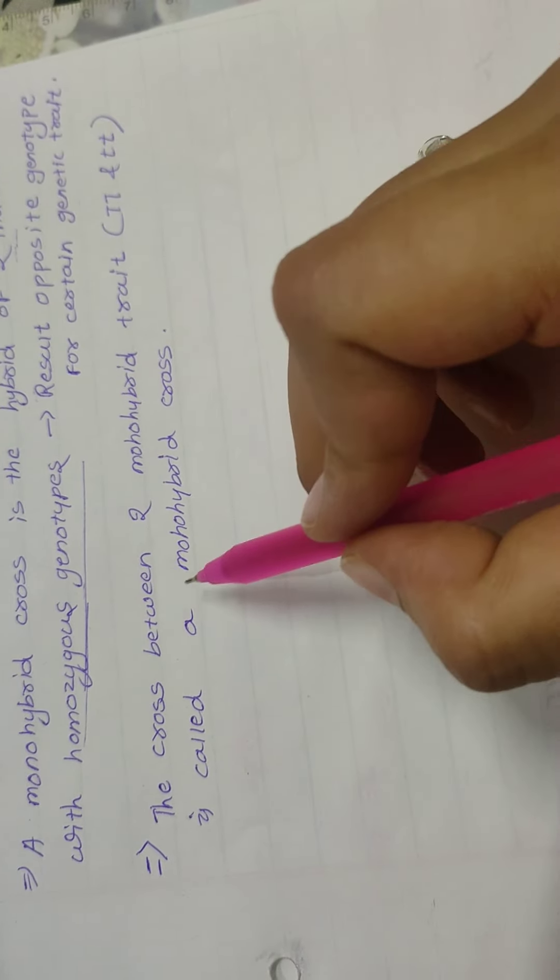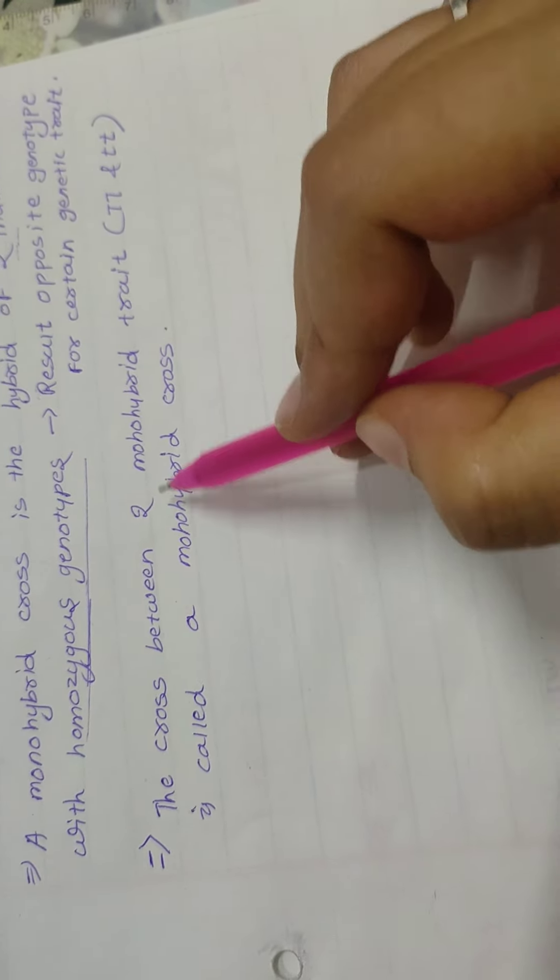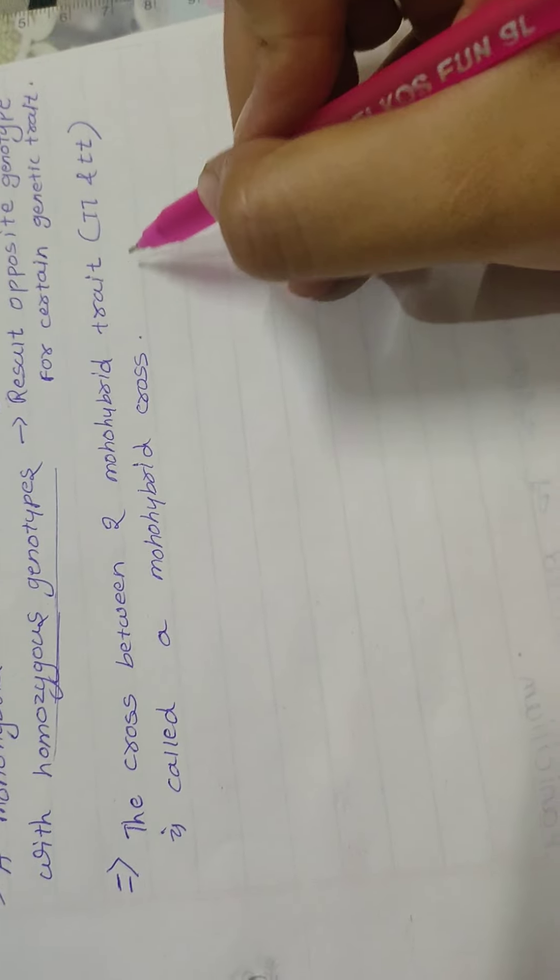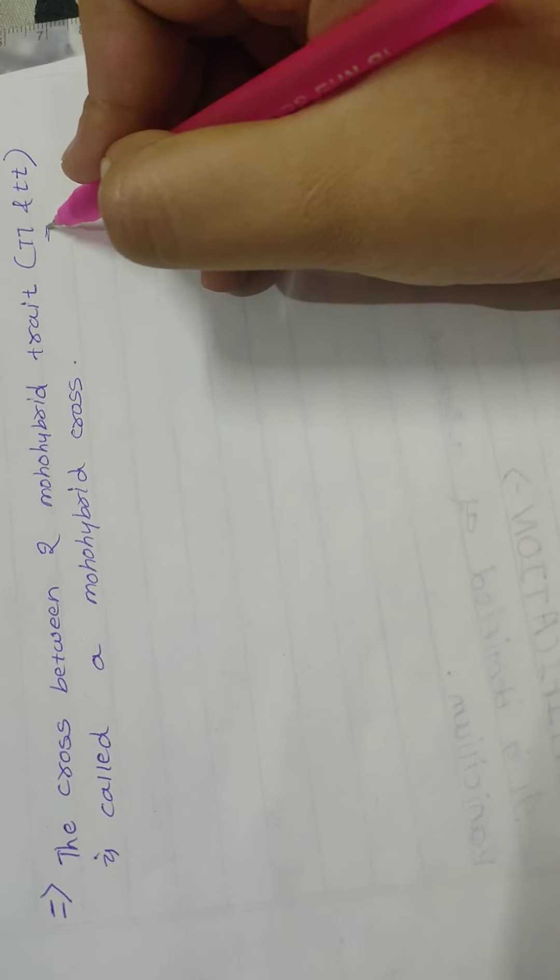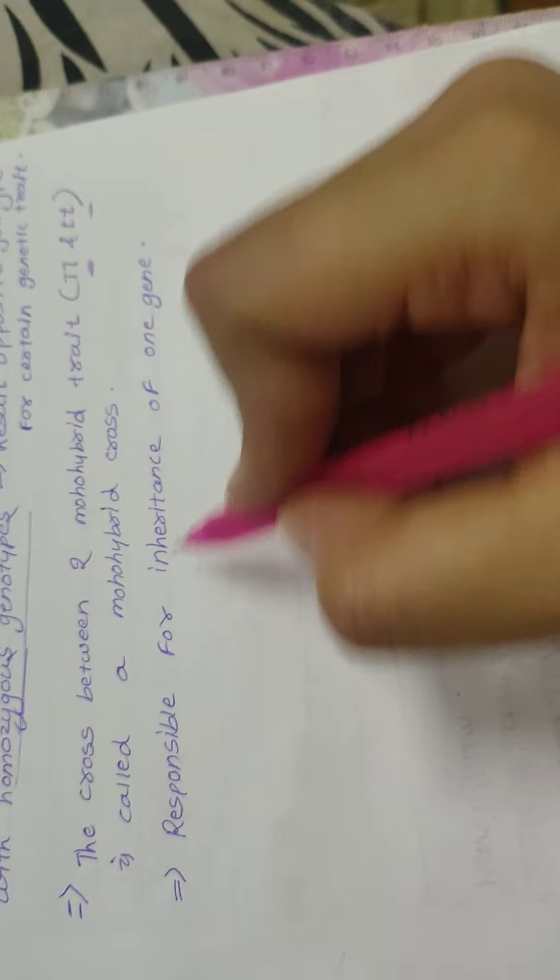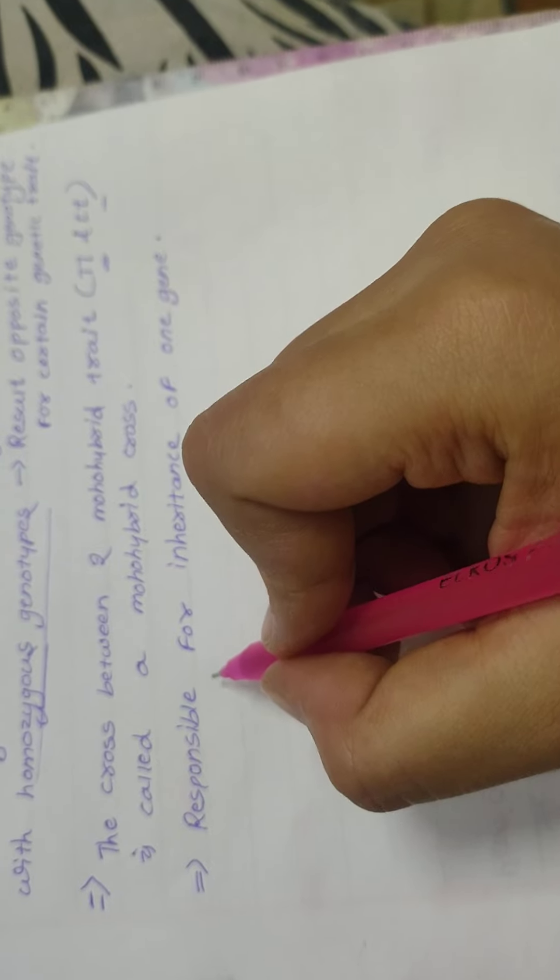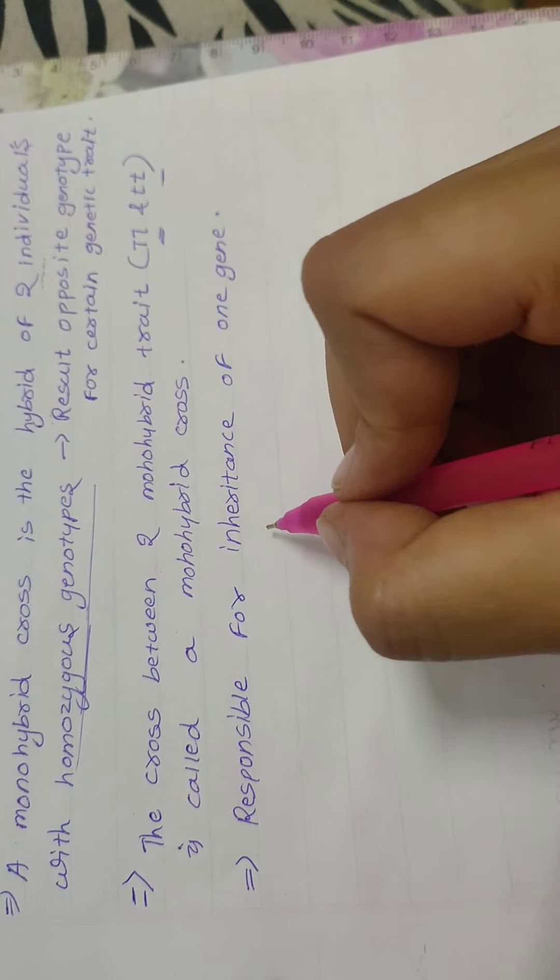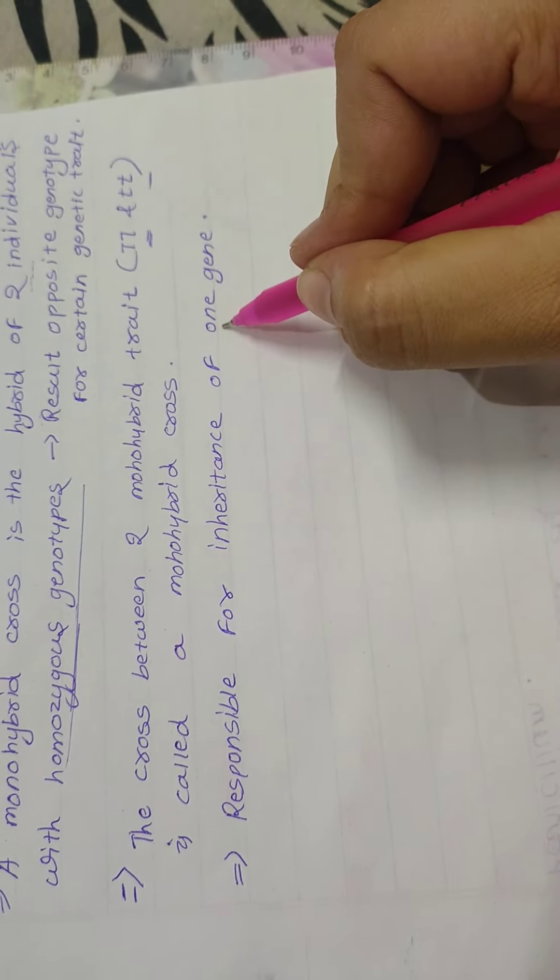Then the second definition is the cross between two monohybrid traits, which is capital T capital T and small t small t, is called monohybrid cross. And the monohybrid cross is responsible for inheritance of one gene.